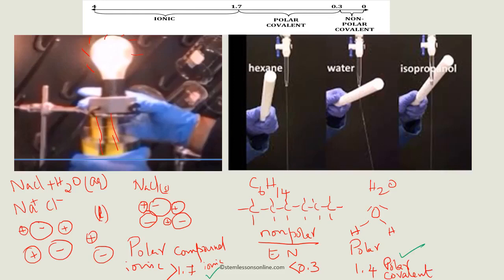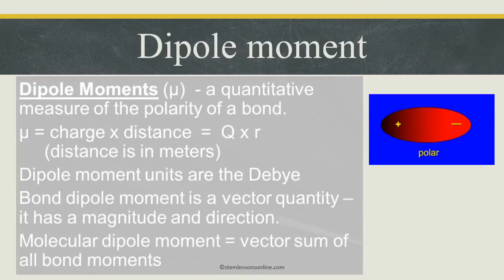Now consider isopropyl alcohol, which is rubbing alcohol. In the case of water, if you hold a charged ebonite rod or charged balloon close to a stream of water, you can see it bending — moving toward or away from the charge — because it is polar. With hexane, you don't see that bending because it is nonpolar. The same trend applies to alcohol. To measure polarity, we use the term dipole moment, which is the quantitative measure of the polarity of a bond.